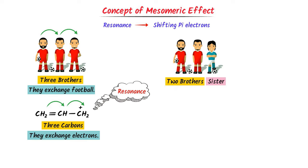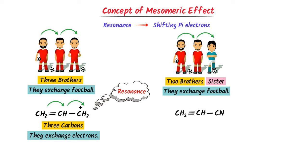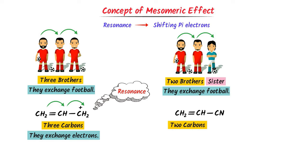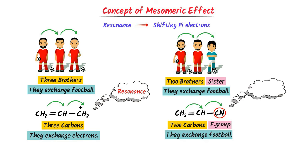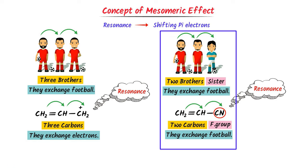In the second case, there are two brothers and one sister — let them also exchange a football. Consider this organic compound: these two carbons represent two brothers and this functional group represents the sister. These are the pi electrons which shift inside the molecule, hence resonance occurs. Remember that these two brothers represent two carbons, this sister represents the functional group, and the shifting of the football represents the shifting of pi electrons.